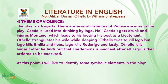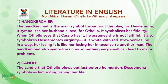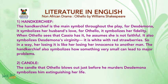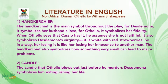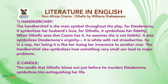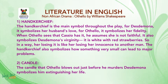Now I would like to identify some symbolic elements in the play. Number one, the handkerchief — it is the main symbol throughout the play. For Desdemona, it symbolizes her husband's love. For Othello, it symbolizes her fidelity. When Othello learns that Cassio has it, he assumes she is not faithful. It also symbolizes Desdemona's virginity — it is white with red strawberries. Losing it is like losing her innocence to another man. The handkerchief also symbolizes how something very small can lead to major problems.